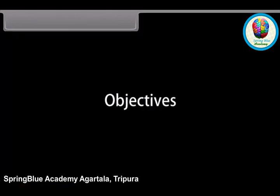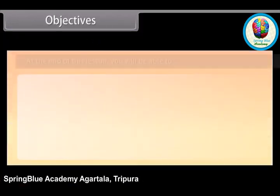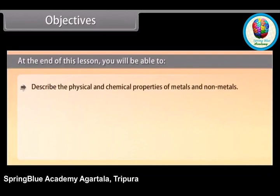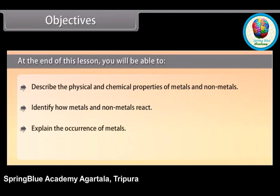Objectives. At the end of this lesson you will be able to: describe the physical and chemical properties of metals and non-metals; identify how metals and non-metals react; explain the occurrence of metals; and describe corrosion.